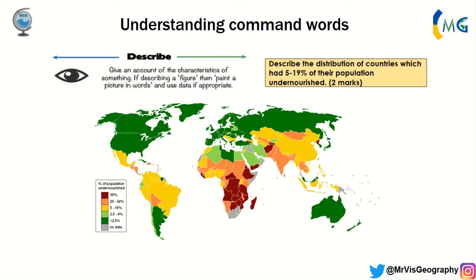You'd say the spread is predominantly in Asia and South America. So countries with a proportion of population undernourished between 5 and 19% include South American countries such as Brazil, Colombia, and Venezuela — that's one mark. Then you'd say countries in Asia such as China, Myanmar, and Indonesia — two marks. Just say what you see on the map. Don't explain why, just say what you see.